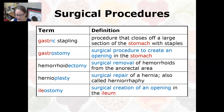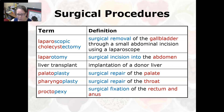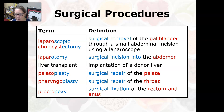An ileostomy is the surgical creation of an opening in the ileum, which is part of the small intestine. Laparoscopic cholecystectomy is the surgical removal of the gallbladder through a small abdominal incision using a laparoscope. A laparotomy is a surgical incision into the abdomen.